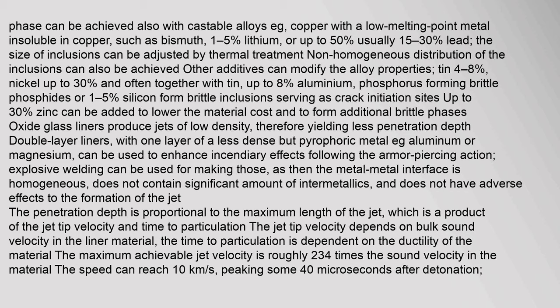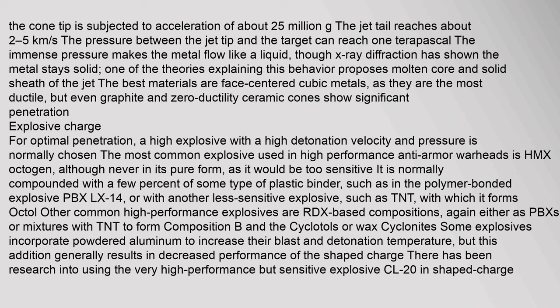Oxide glass liners produce jets of low density, yielding less penetration depth. Double layer liners, with one layer of a less dense but pyrophoric metal such as aluminum or magnesium, can be used to enhance incendiary effects following the armor-piercing action. The penetration depth is proportional to the maximum length of the jet, which is a product of the jet tip velocity and time to particulation. The jet tip velocity depends on bulk sound velocity in the liner material. The maximum achievable jet velocity is roughly 2.34 times the sound velocity in the material, and the cone tip is subjected to acceleration of about 25 million g.